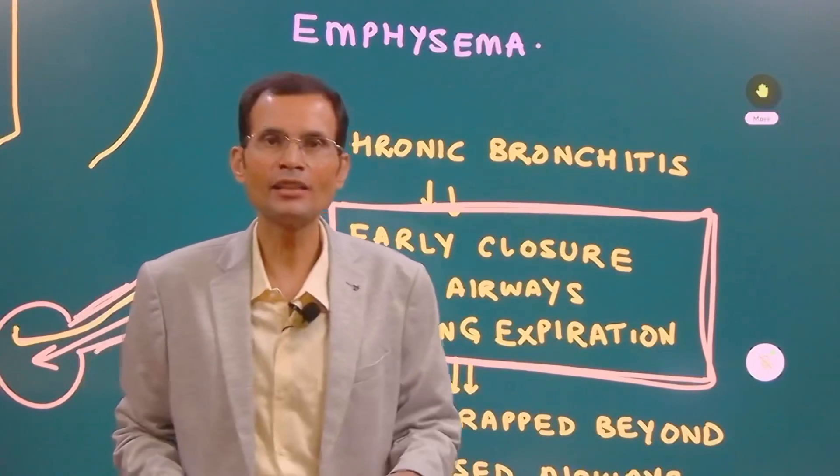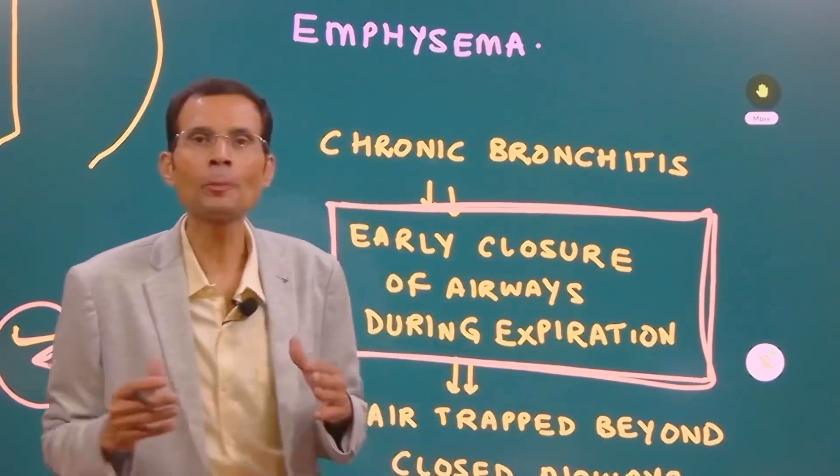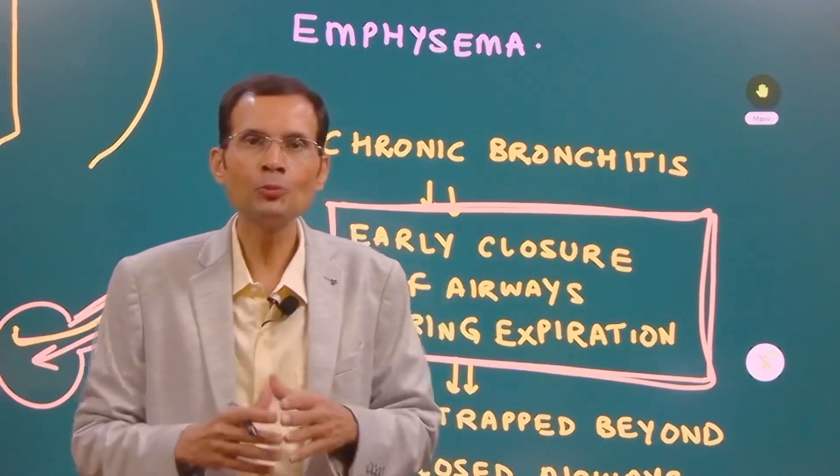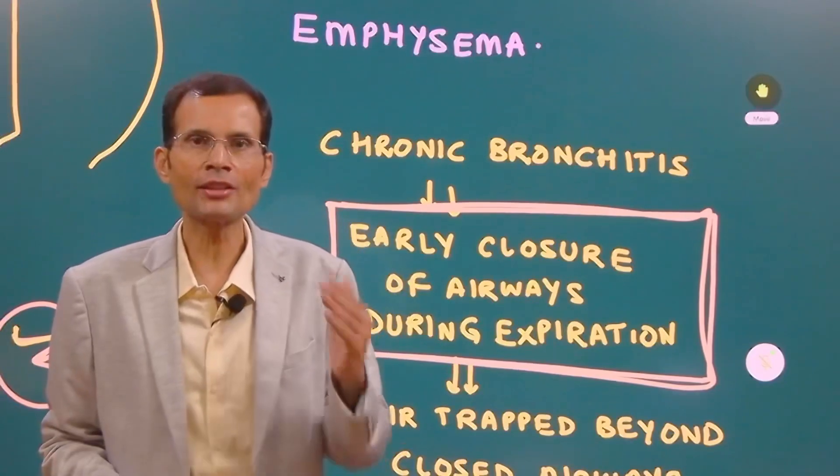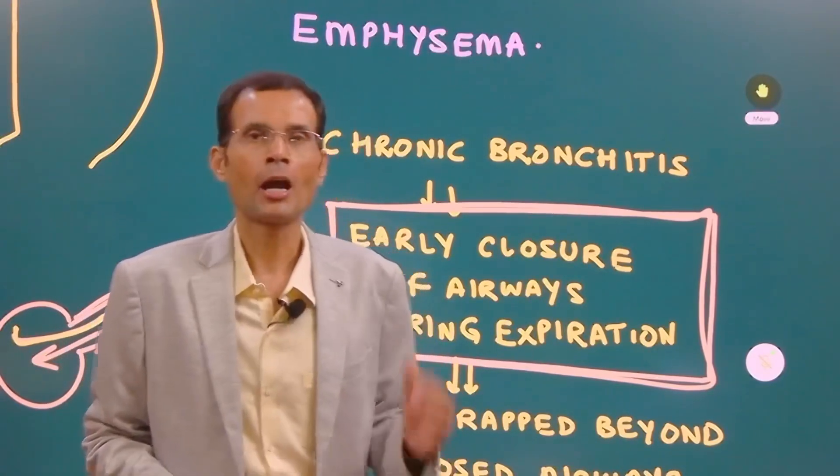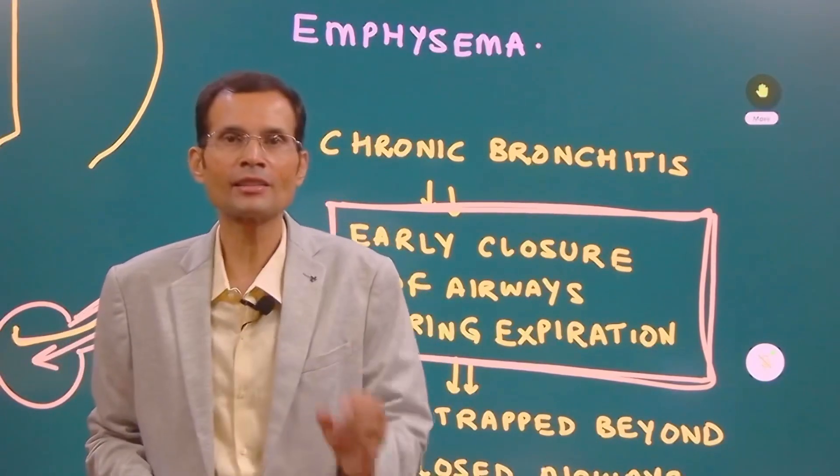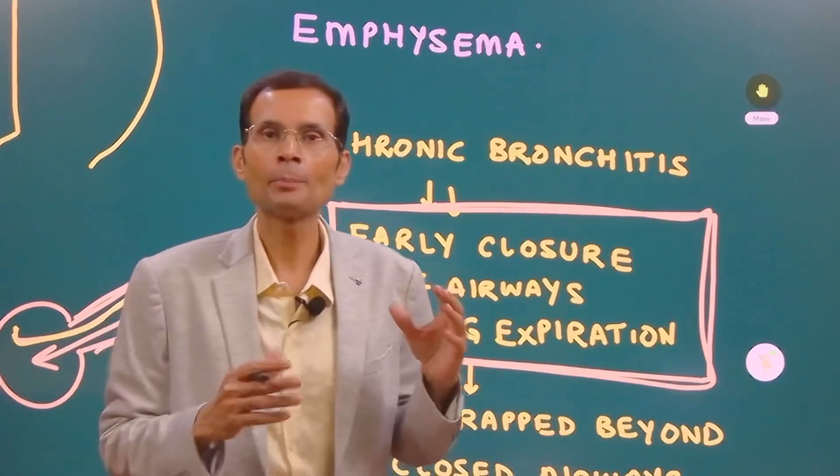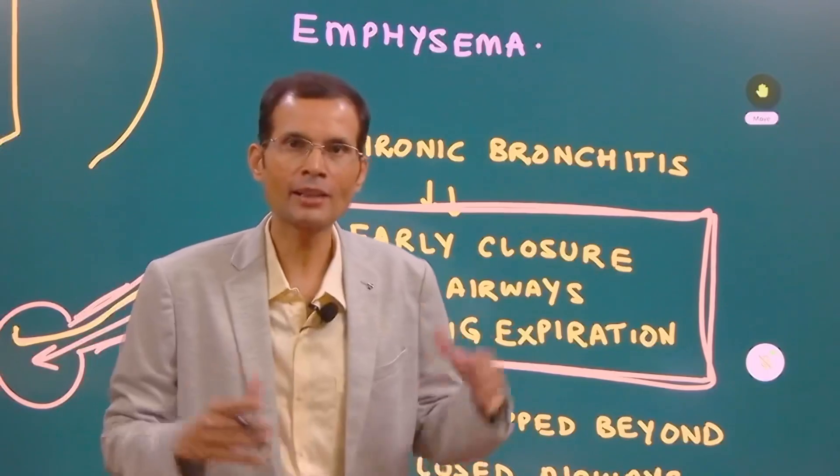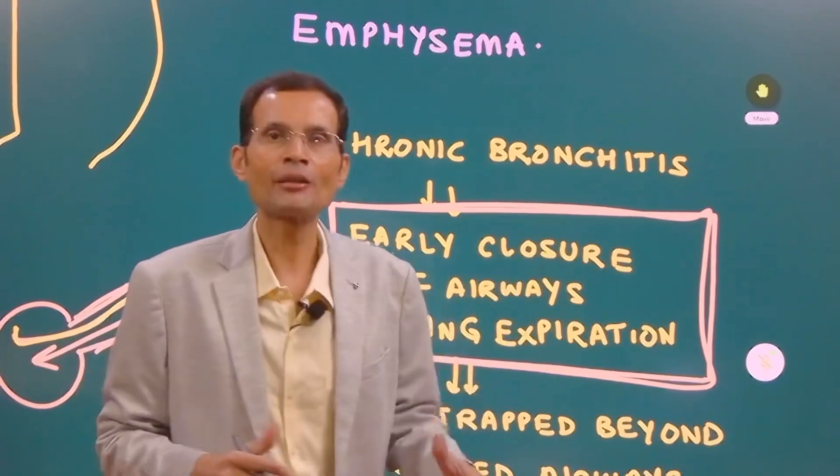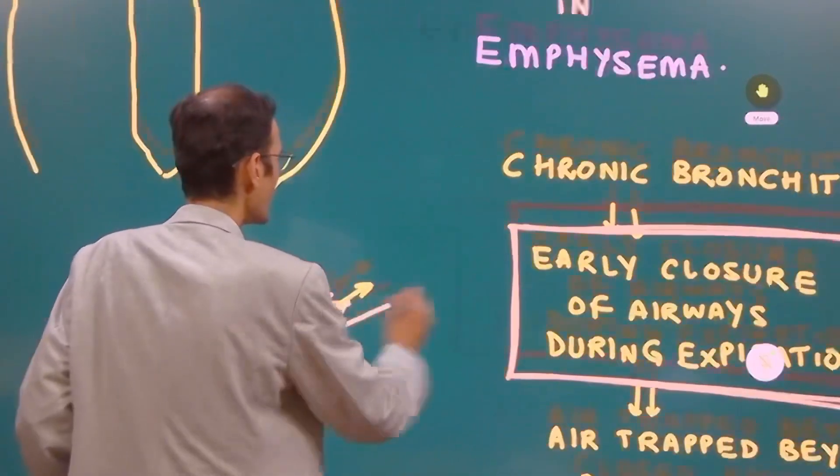Now chronic bronchitis is a COPD and you must be aware that in COPD inspiration is relatively easy but expiration is little difficult because of the positive pressure during expiration plus the recoil of the system and therefore expiration is difficult.